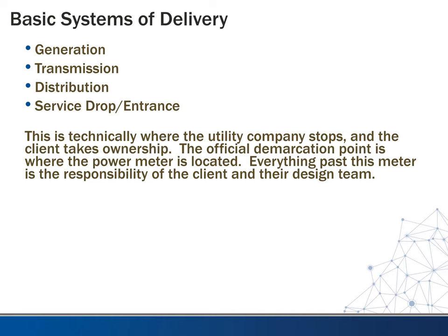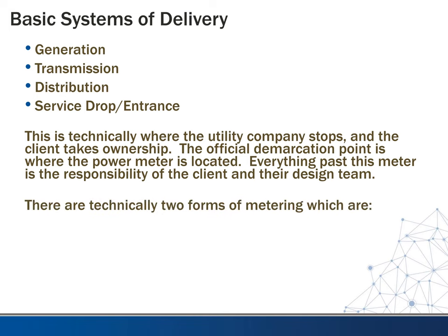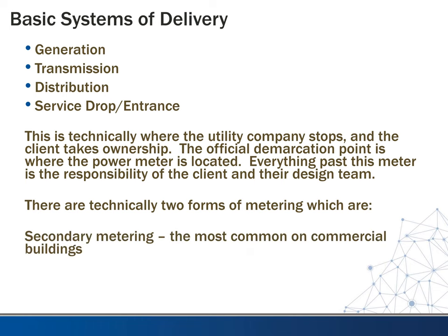It's important that we understand where this demarcation is and that the client understands it too. There are technically two forms of metering. The first is secondary metering, which is the most common on commercial buildings. In this case, the meter is located past the utility company transformer, meaning the utility company is responsible for that transformer — if something happens to it, they're responsible for fixing or servicing it.